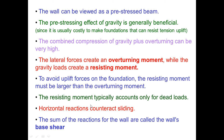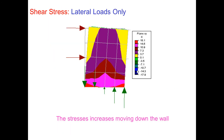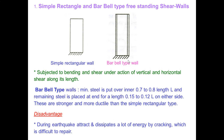The resisting moment typically accounts only for dead loads, and the sum of horizontal reactions for the wall is called the wall base shear. ANSYS results show the behavior of the wall clearly with stress levels shown in different colors. Gravity increases compression stresses and reduces tensile stresses. When gravity and lateral loads act together, stress distribution is asymmetric, with most of the wall in compression. Under lateral loads only, stress increases moving downward toward the base of the wall.